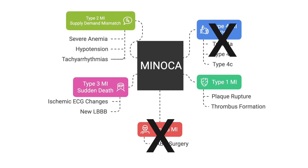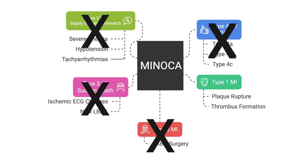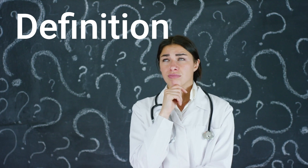Can MINOCA be any of the five MI types? Types 4 and 5 are excluded because they involve clear interventions and clear epicardial disease. Type 3 is also excluded as it deals with patients who have already died. This leaves Type 1 and Type 2 as potential candidates. However, the most recent definition of MINOCA specifically excludes Type 2 MI when there's a clear cause of supply-demand mismatch — arrhythmia, sepsis, anemia, or hypotension. If such a clear cause exists, it's a Type 2 MI, not MINOCA. Therefore, MINOCA is a subgroup of Type 1 MI.